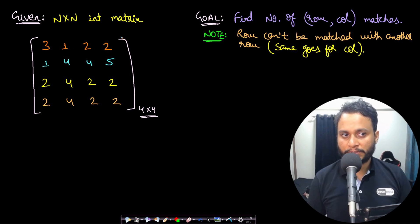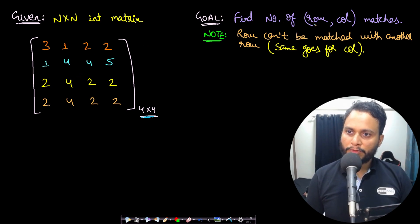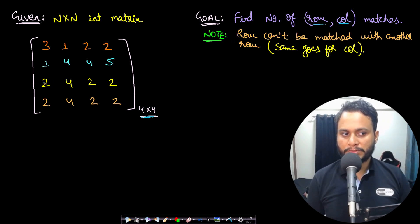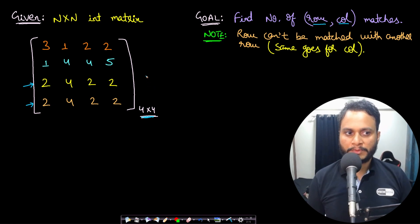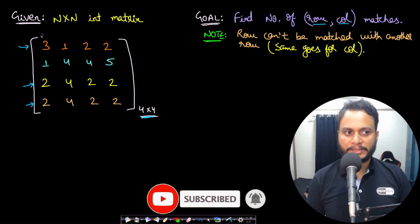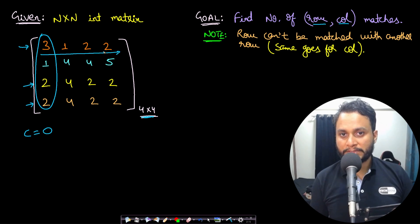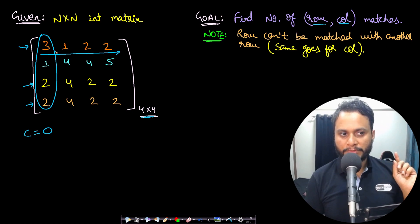Let's look at an example for better understanding. We have an n by n integer matrix — let's take a four by four matrix with all the values shown. You can see four rows and four columns. Our goal is to find the number of row and column matches. Note that row number three and row number four are exactly matching, but that will not contribute to the final answer — you always have to match a row with a column.